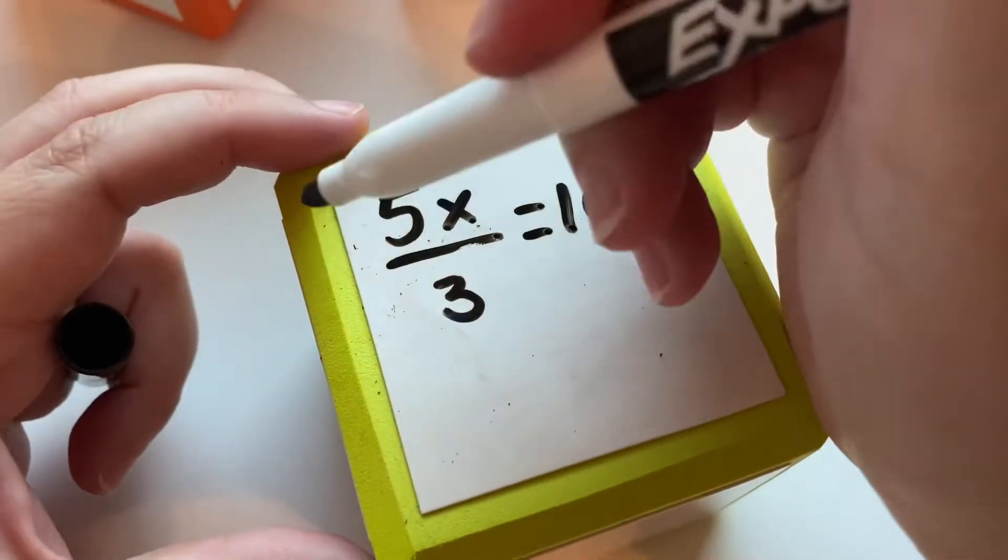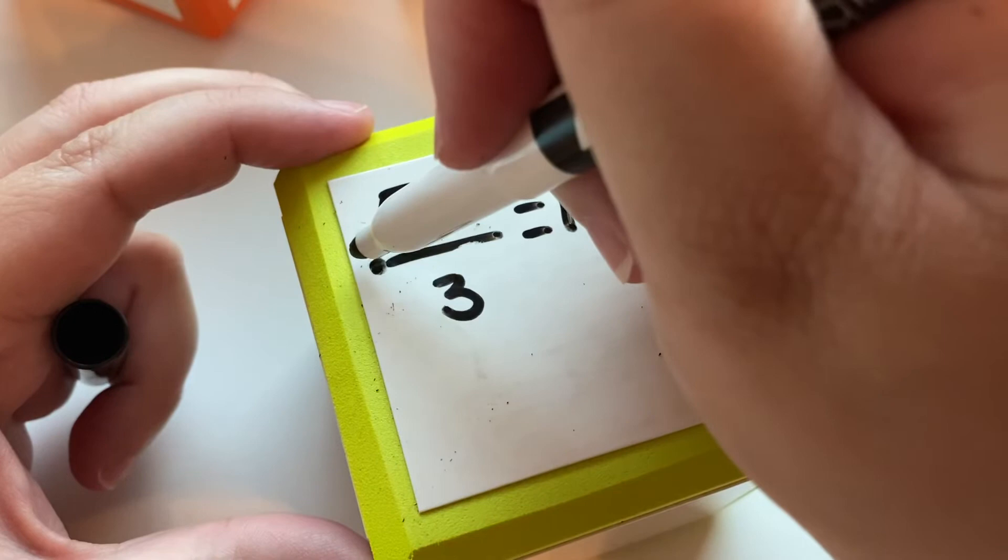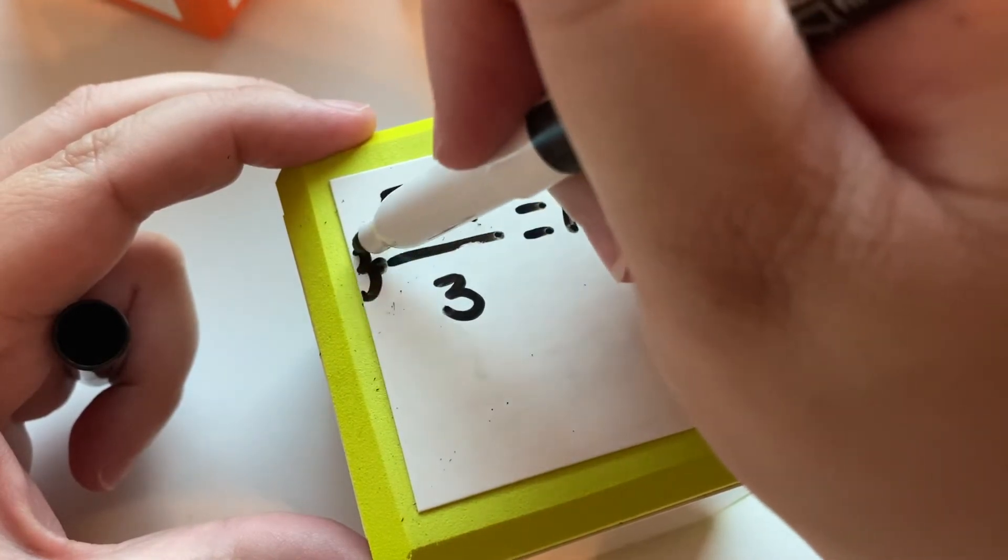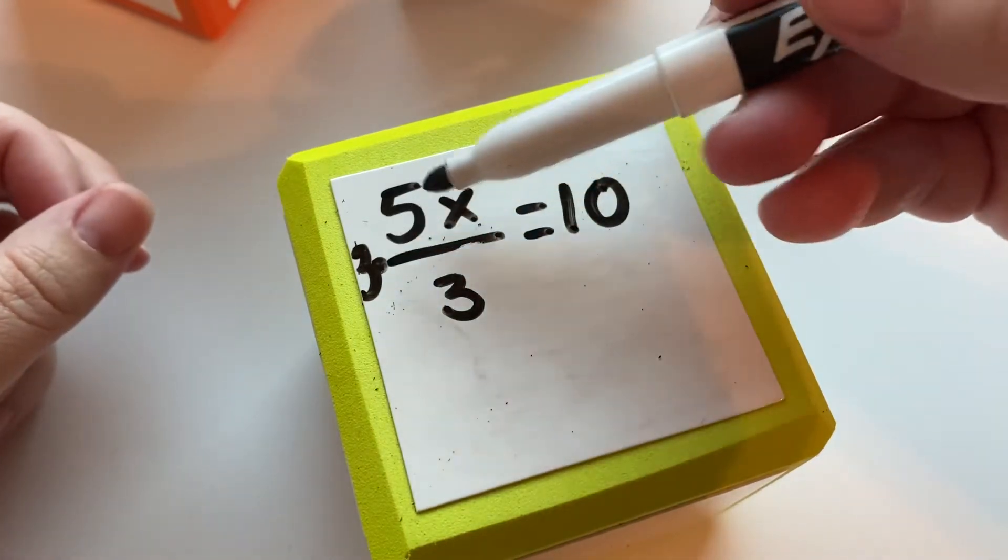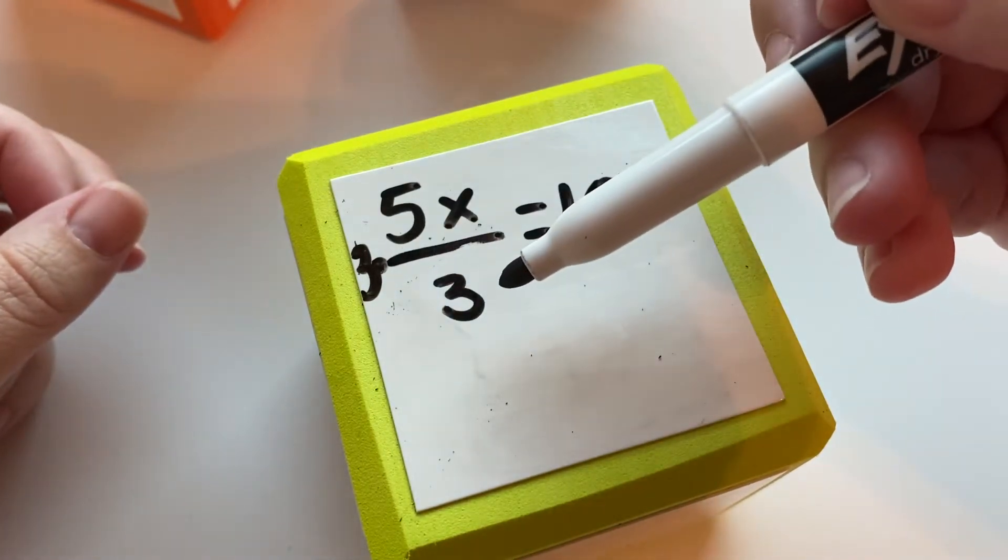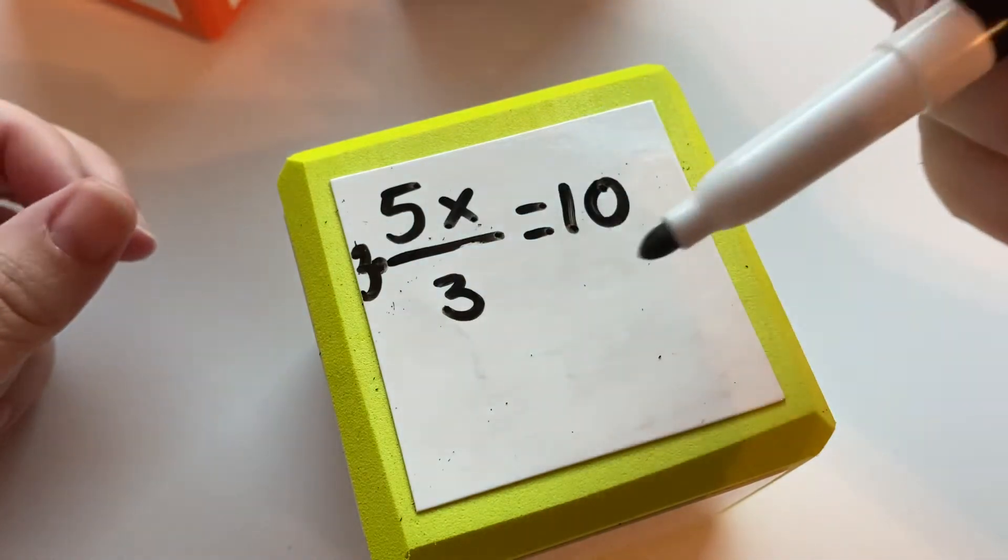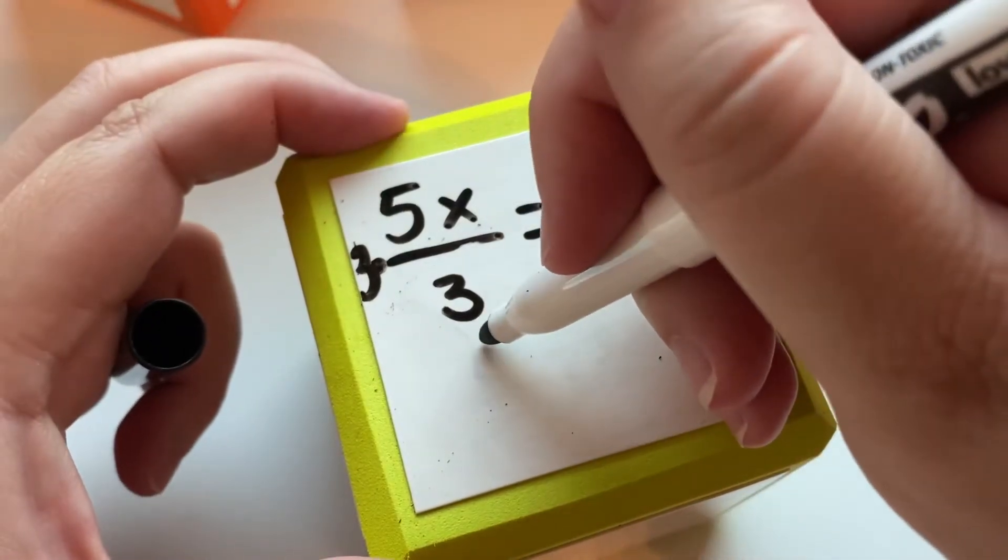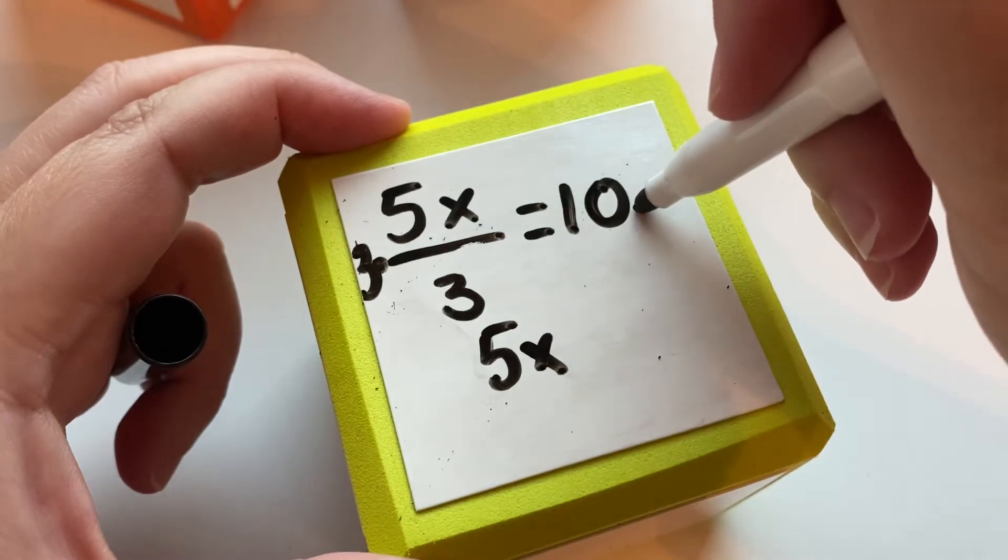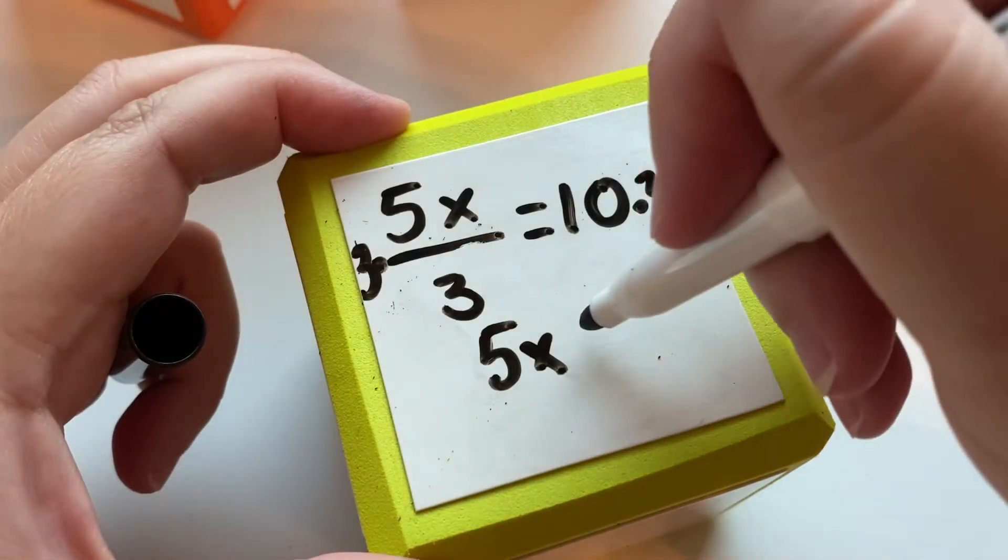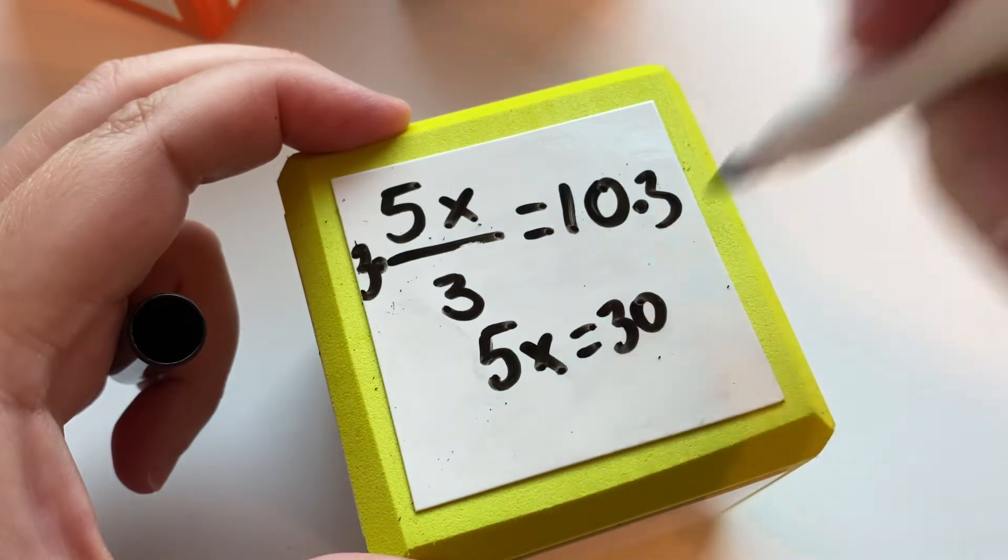We're going to do the inverse operation, so we're going to times everything by 3. This 3, when you multiply a fraction by its denominator, the result will be whatever the numerator is. So in this case, it's 5x. And then we're going to times this side by 3. We're going to get 5x equals 30.